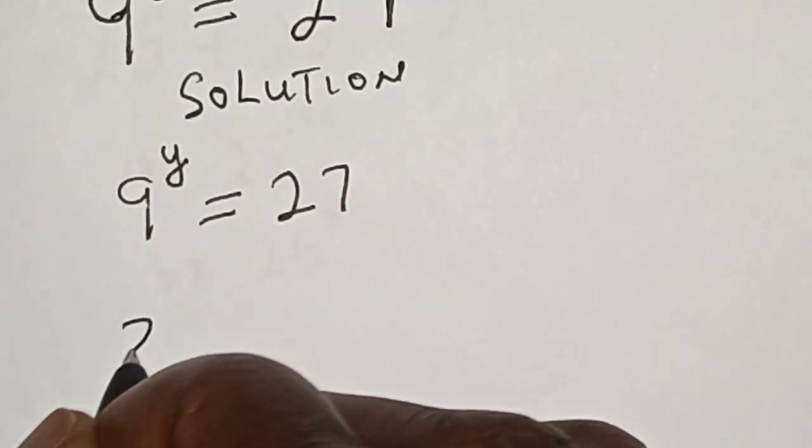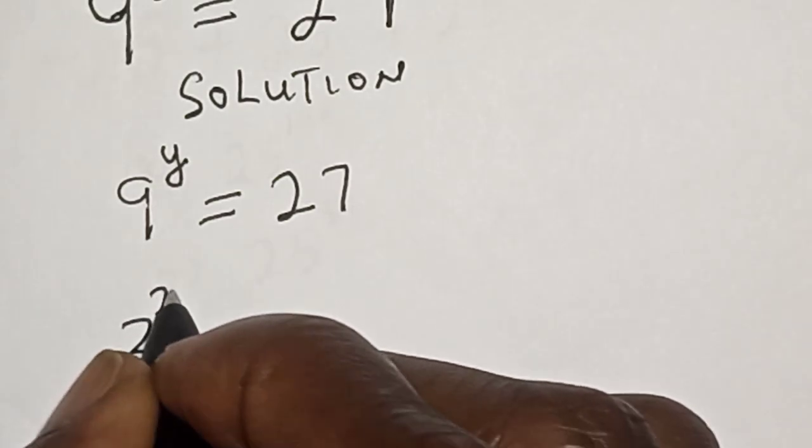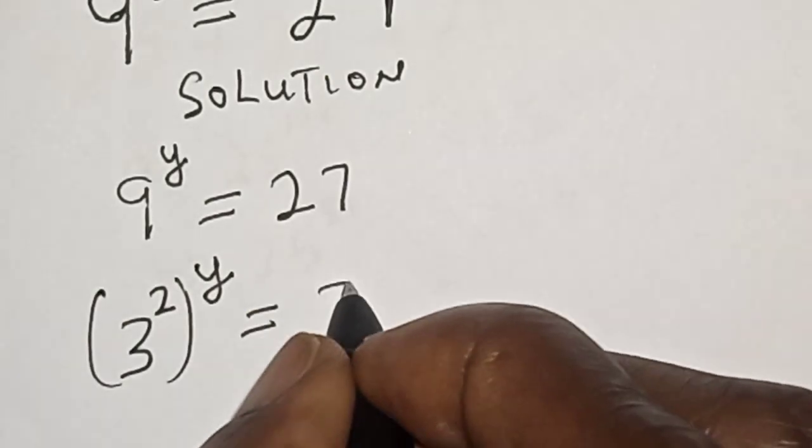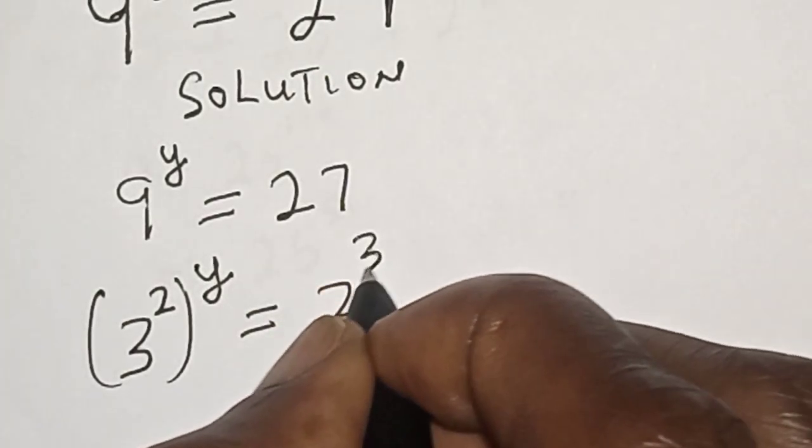This is 3 squared raised to power y is equal to 27, which is 3 raised to power 3.